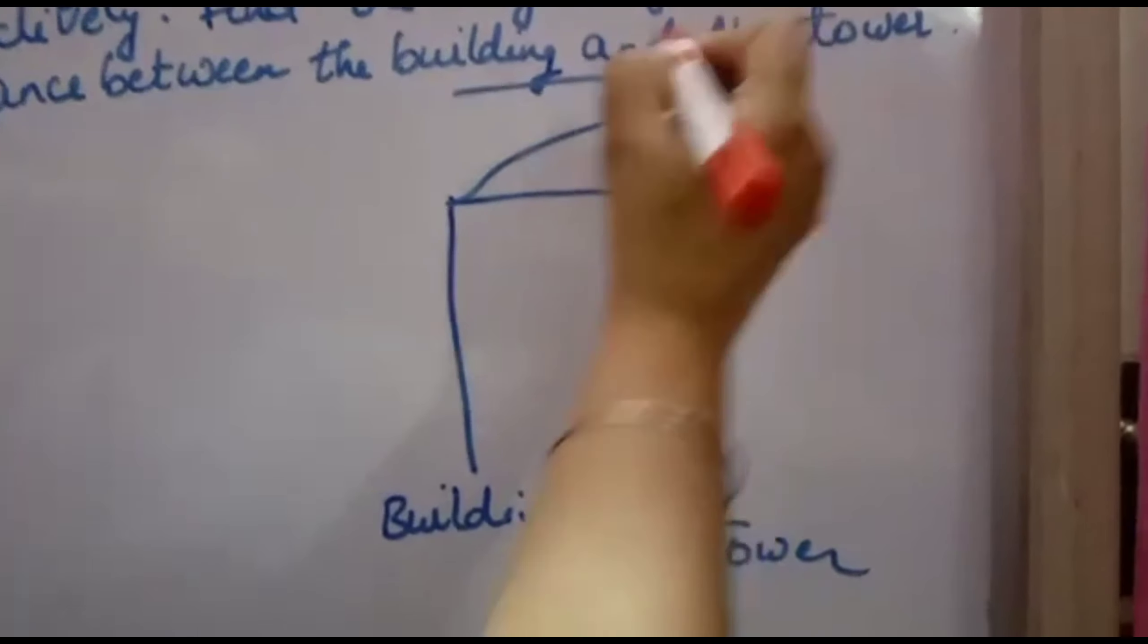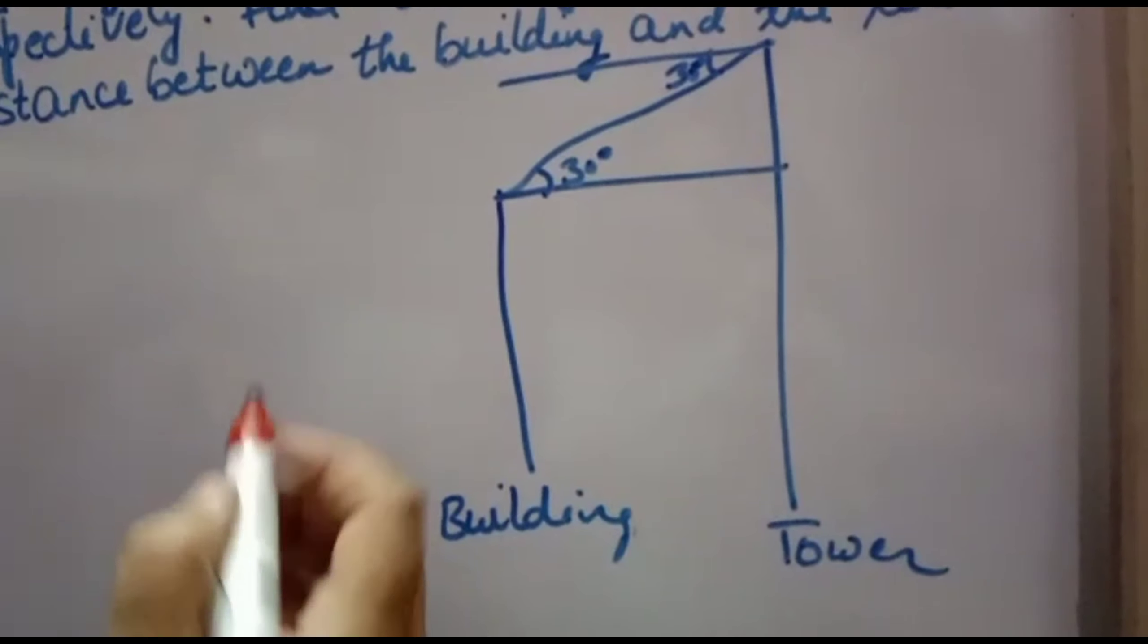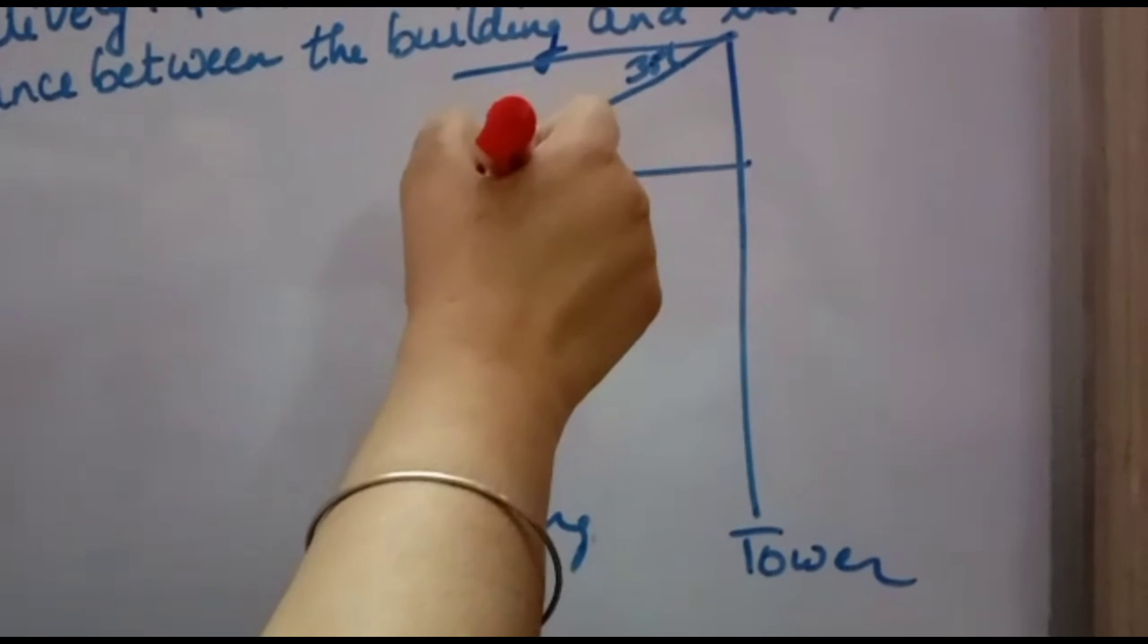Now angle of depression from the top of the tower to the building on the top is 30 degree. That means this angle is 30 degree. If this angle is 30 degree, this will also be 30 degree because they are alternate interior angles.